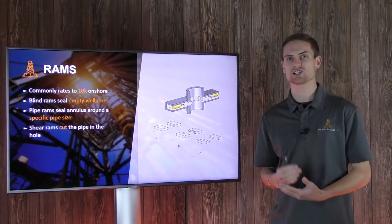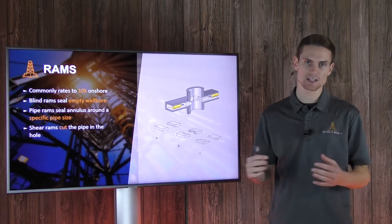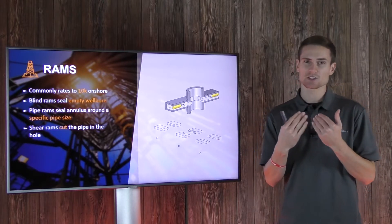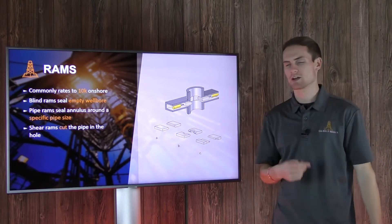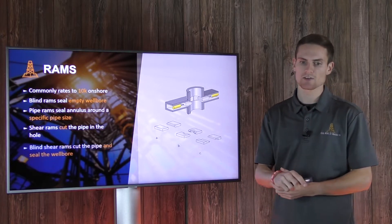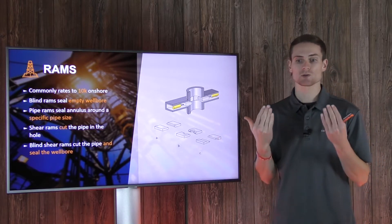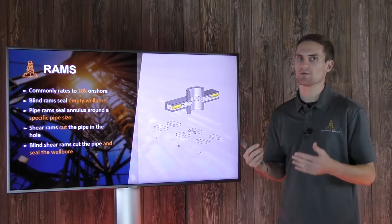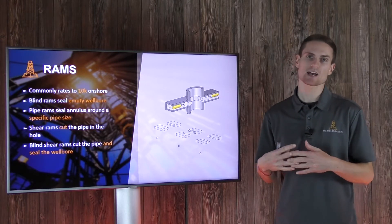Next is shear rams. Shear rams are designed to cut through the pipe or whatever is in the hole, as shown here in C — it's literally two blades being pushed together, sometimes like two Vs coming together, to actually sever the pipe. A spin-off of that is what we call a blind shear ram, which not only cuts the pipe but also creates a seal. Shear rams alone don't create a seal — they just cut the pipe — whereas a blind shear ram cuts the pipe and seals the well.